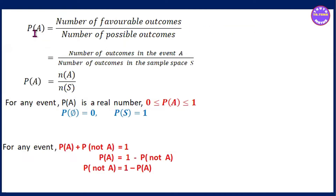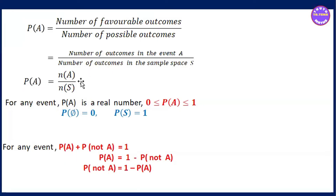The number of outcomes in event A divided by the number of outcomes in sample space S. So the probability P(A) is equal to n(A) by n(S). So here the probability is 0.1.